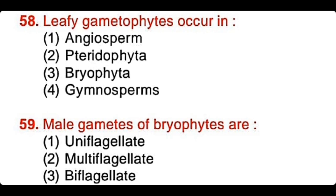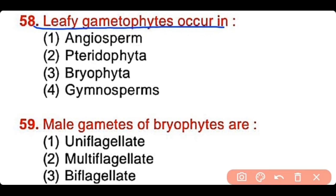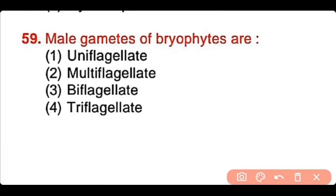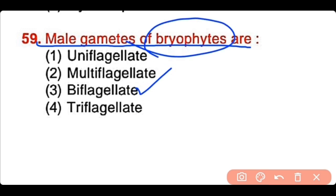Question number 58: The leafy gametophyte occurs in angiosperms, pteridophyta, bryophyta, or gymnosperms. The correct answer is option 3 — bryophytes have a leafy gametophyte that mostly occurs in mosses. Question number 59: Male gametes of bryophytes are uniflagellate, multiflagellate, biflagellate, or triflagellate. The correct answer is option 3. Biflagellate male gametes are present in bryophytes.